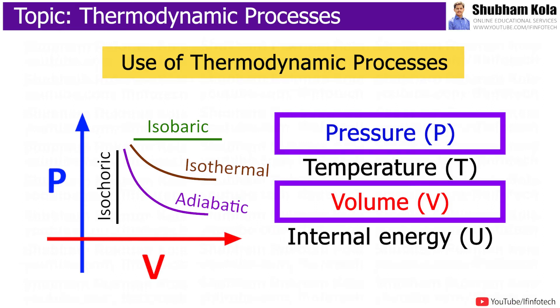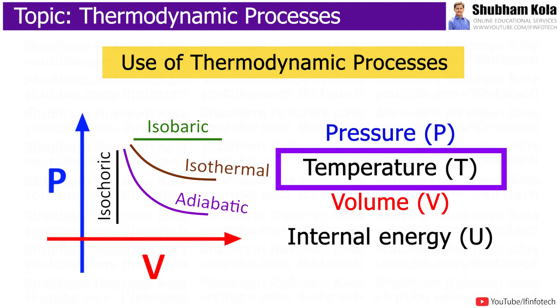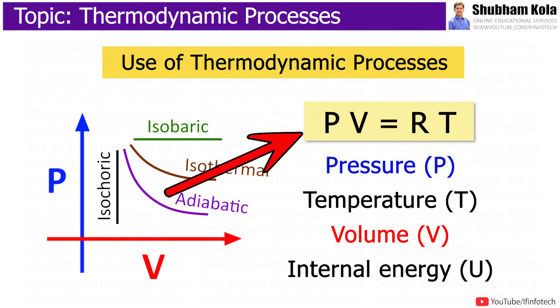If any two parameters are fixed like pressure and volume for fixed mass of gas, the temperature of gas will automatically fix according to equation PV is equal to RT.